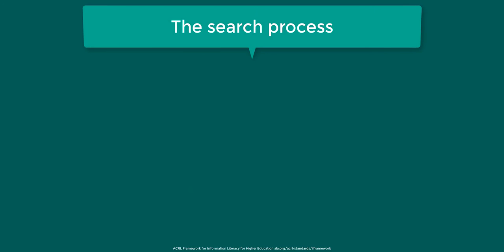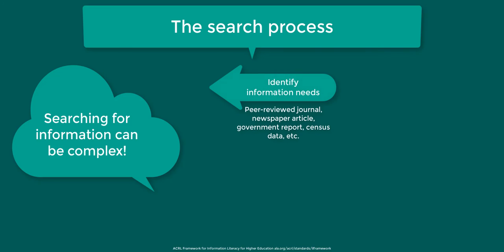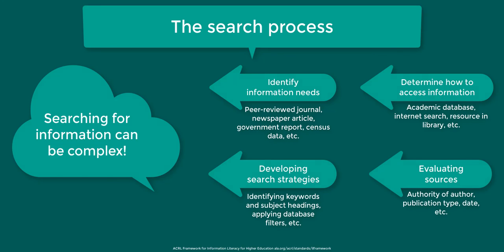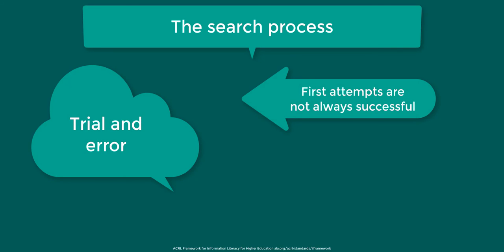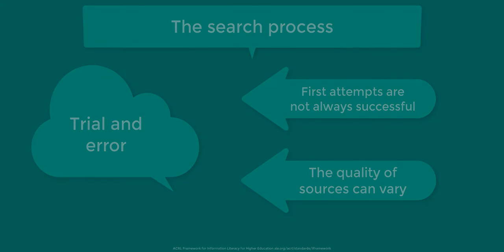The sixth and last concept is about the search process. Searching for information can be complex. It requires identifying information needs, determining how to access information, developing search strategies, and evaluating sources. It's important to understand that first attempts at searching don't always produce adequate results, and to realize that sources can vary greatly in content, in relevance, and in value.